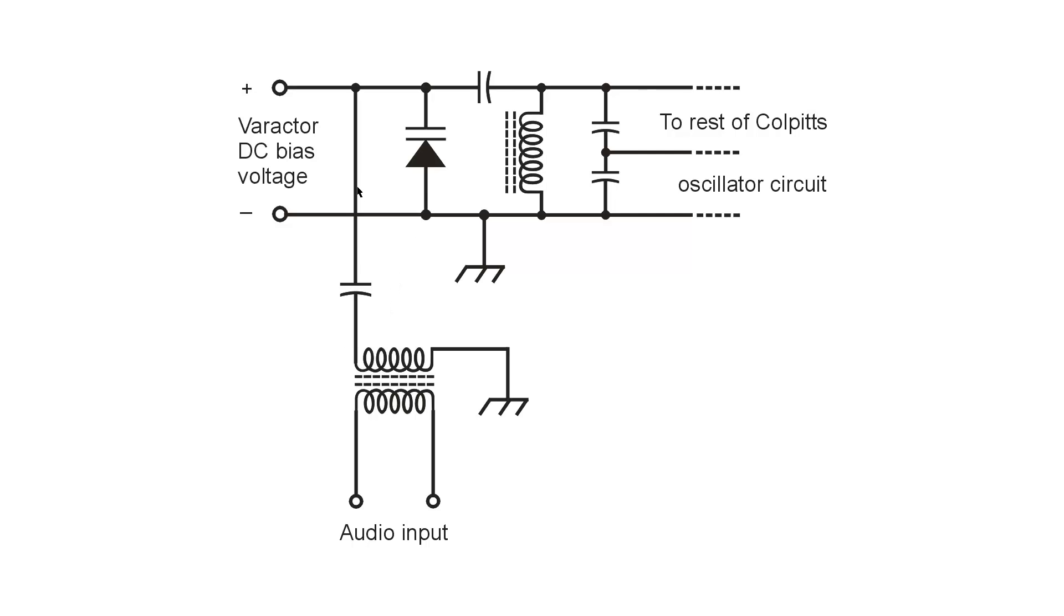The varactor is a variable capacitance diode when reverse biased, and the variable capacitance is obtained by varying the voltage across this diode. When you get more reverse bias, you get a wider depletion region and lower capacitance. When you get less reverse bias, you get a narrower depletion region around the PN junction, and you get a higher capacitance.